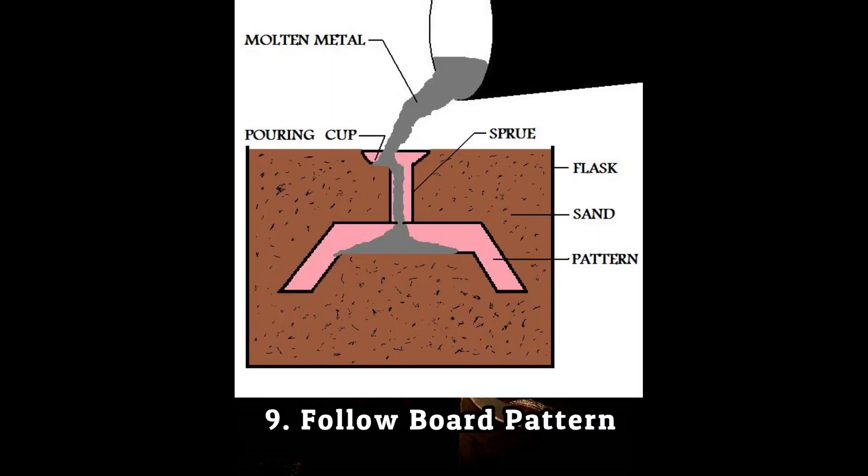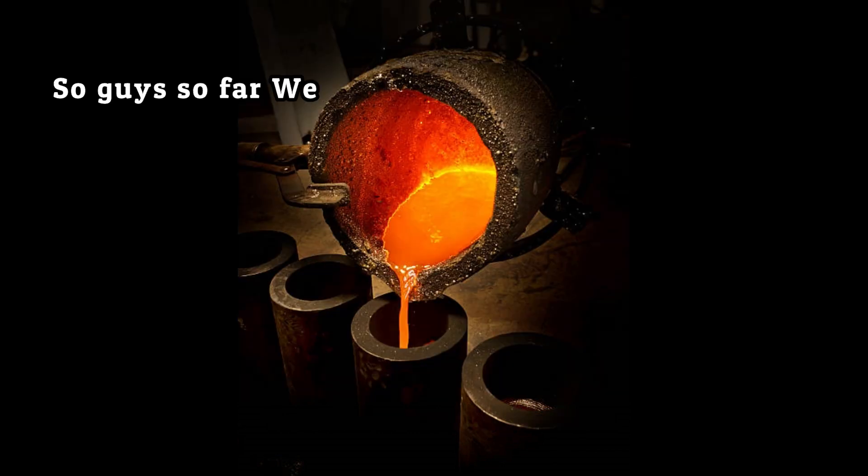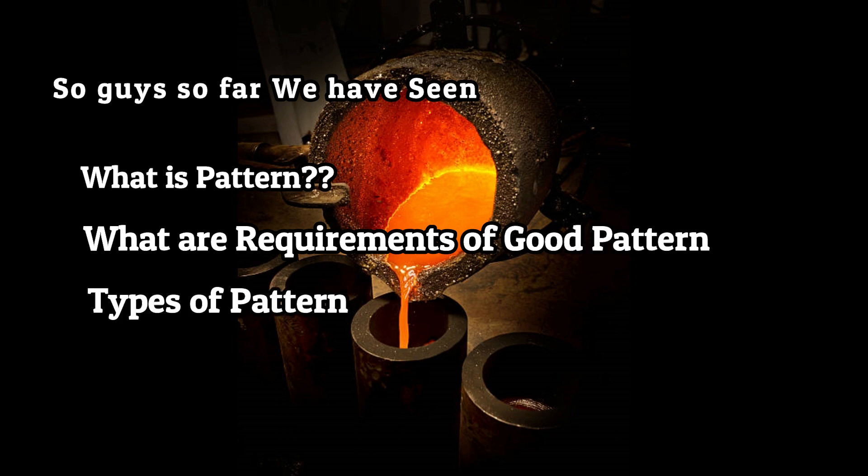Ninth and the last one is follow board pattern. Follow board is a wooden board which is used to support the pattern during molding. It acts as a seat for the pattern. So guys, in this video we have seen what is pattern, what are the requirements of good pattern, and the types of patterns.